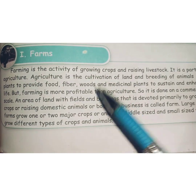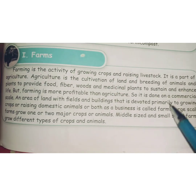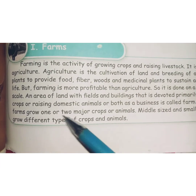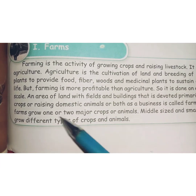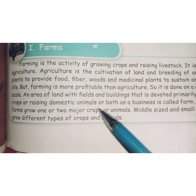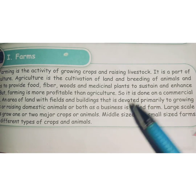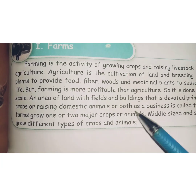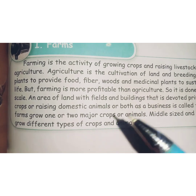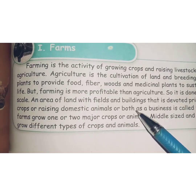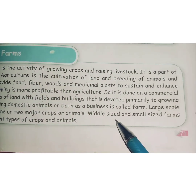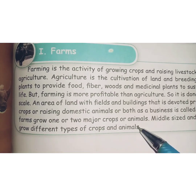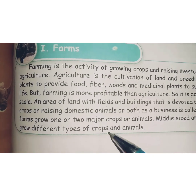A farm is an area of land with fields and buildings devoted primarily to growing crops or raising domestic animals, or both, as a business. Large-scale farms grow one or two major crops or animals. Middle-sized and small farms grow different types of crops and animals.